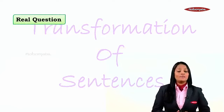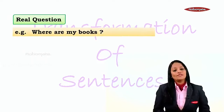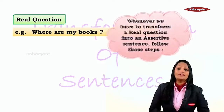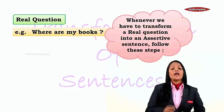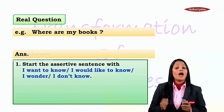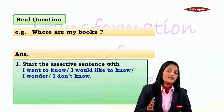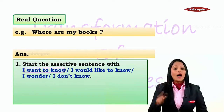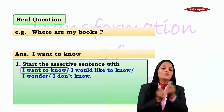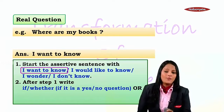The next type is a real question: 'Where are my books?' In this case there is a real question — the person wants to know where the books are. Whenever there is a real question, first and foremost start the assertive sentence with either 'I want to know,' 'I would like to know,' 'I wonder,' or 'I don't know.' In this case, 'I want to know where my books are,' so we say: 'I want to know...'